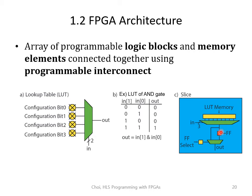The output of the LUT is usually co-located with flip-flops, which act as a memory element. You may choose to store the output of the LUT or bypass it. The set of LUT, flip-flops, and MUX is called a slice and is the building block of FPGAs.